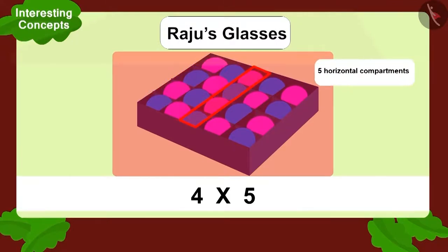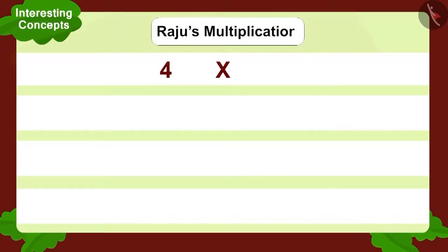Here, Raju saw five horizontal compartments and four balls in each compartment. Four multiplied by five. Can you write this in another way? Four times five.